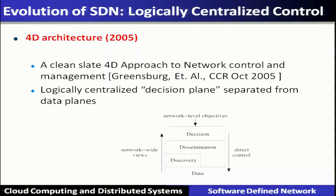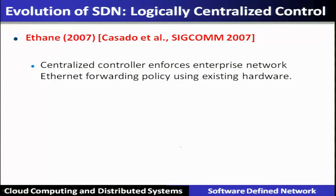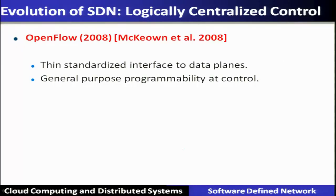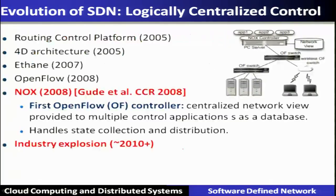Another architecture is the 4D architecture of 2005, which gives an approach to network control and management and defines a logically centralized decision plane. Ethane is also a precursor to SDN, given in 2007. It is a centralized controller which enforces enterprise network Ethernet forwarding policy using existing hardware, again separating policies and mechanisms. OpenFlow came in 2008 — a thin standardized interface to the data plane providing general programmability at the control level. NOX uses the first OpenFlow controller, which has a centralized view provided to multiple control applications just like a database.